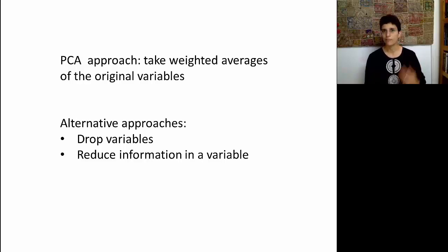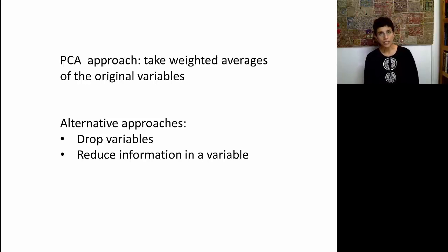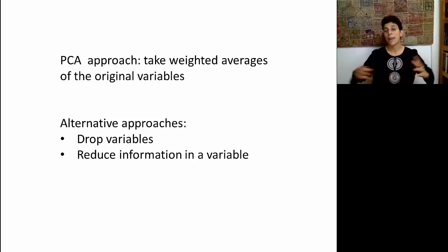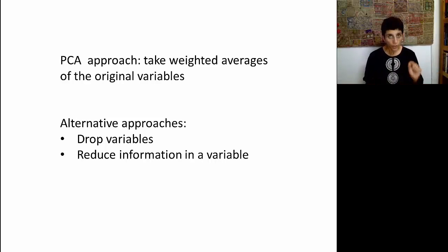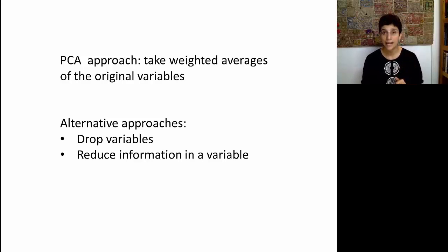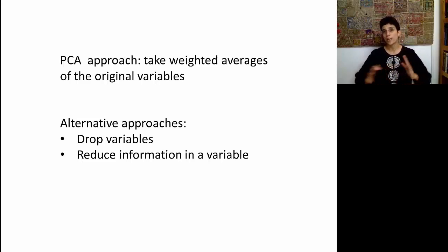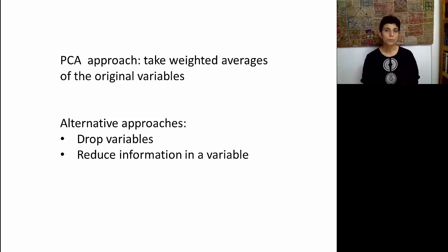One option is to simply drop some variables, and let's talk about that in just a minute. Another option is that some variables might contain a lot of information that expands greatly when we transform them for analysis. One critical example is a categorical variable that has many, many categories. In order to use that in many analyses, we're going to have to create dummy variables, thereby creating a large amount of new columns. So let's examine these two approaches.